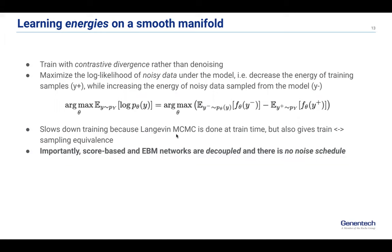I've now introduced two totally separate neural networks: one is a score-based denoiser, and the other is an energy-based model learning an energy function over this smooth data. These two models are totally decoupled — they don't interact with each other at all and are trained completely independently. At no point did I mention a noise schedule or reverse diffusion — there's just a single noise level, sigma, which is the amount of noise added to the training data.